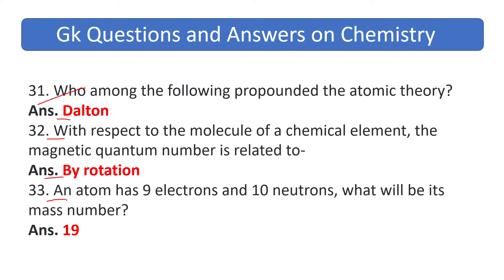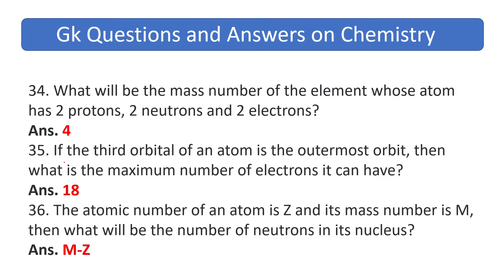An atom has nine electrons and ten neutrons — what will be its mass number? The answer is 19. What will be the mass number of an element whose atom has two protons and two neutrons? The answer is four. If the third orbital of an atom is the outermost orbit, what is the maximum number of electrons it can have? The answer is 18.